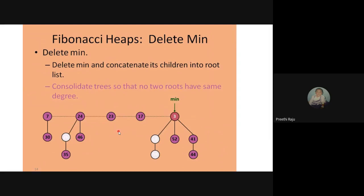Now we'll see deletion. First, deleting the minimum value: in this example, 3 is the minimum value key and also the minimum pointer. If you want to delete the minimum, delete it and concatenate its children into the root list. If you delete 3, the children of 3 — that is 18, 52, and 41 — will be added to the root list. Note: 18 is a marked node, meaning it has lost one child, while 52, 41, 44 are unmarked — they have not lost any child.